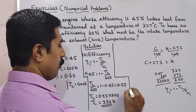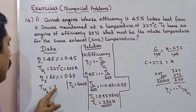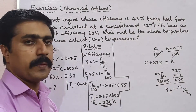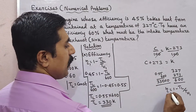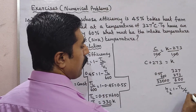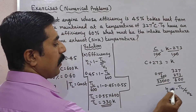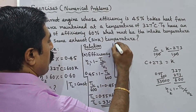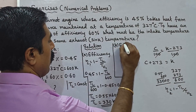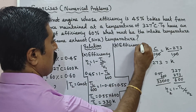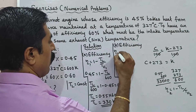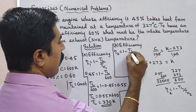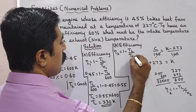Now we will find TH2. Since TL equals 330 Kelvin, we apply the efficiency formula for the second case. Eta₂ equals 1 minus TL divided by TH2.